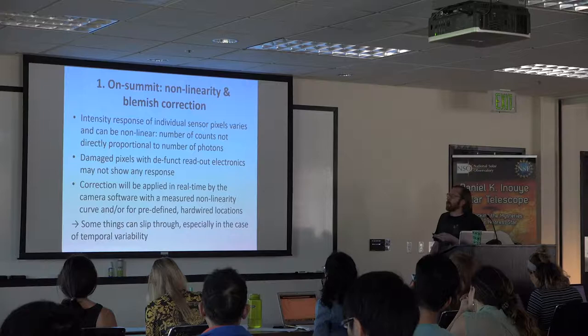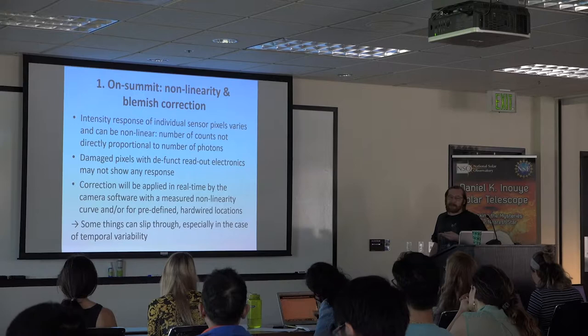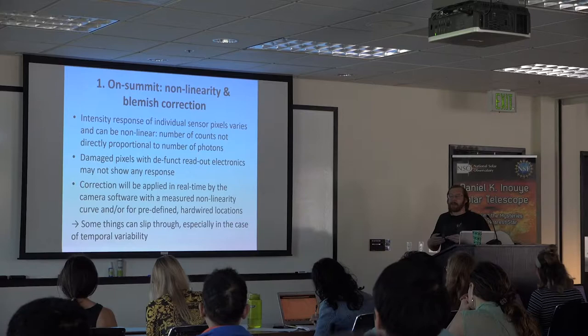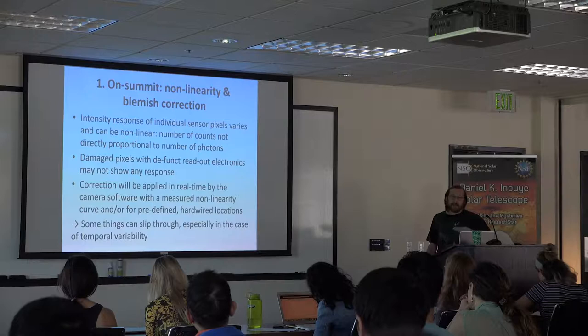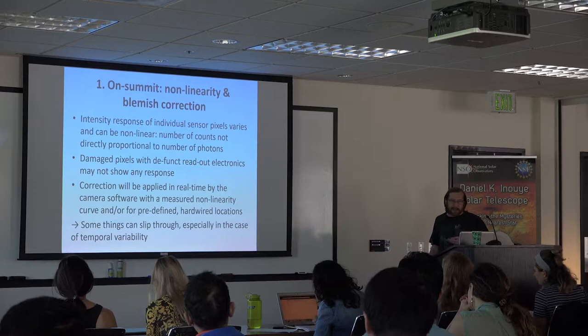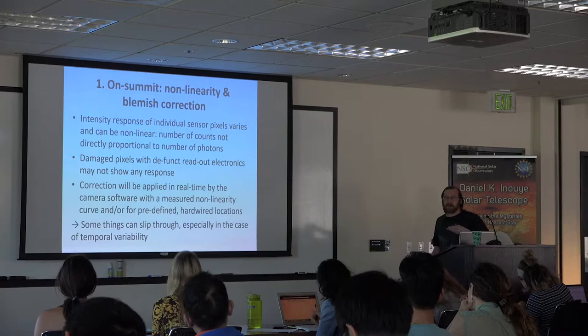The second thing is what is usually called a blemish correction or something similar. Some CCD pixels might just be dead — there is nothing to correct for, you have to figure out where they are and take them out of the data. That will be applied in real time in the camera software. The main problem is that this will be hardwired, so if something varies in time it's an effect that can slip through because you can't do the correction at the telescope itself.